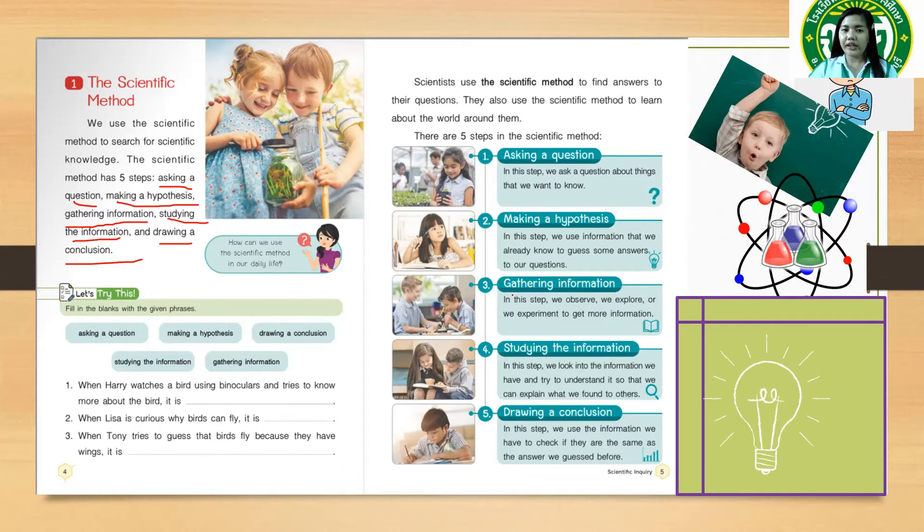And number three: gathering information. In this step, we observe, we explore, or we experiment to get more information. Okay, so for you to get more information, you need to gather. Let's say, for example,